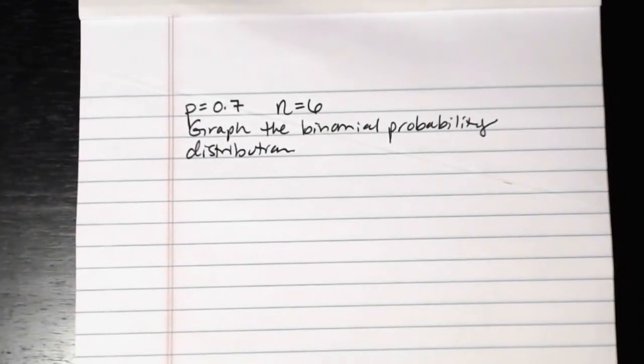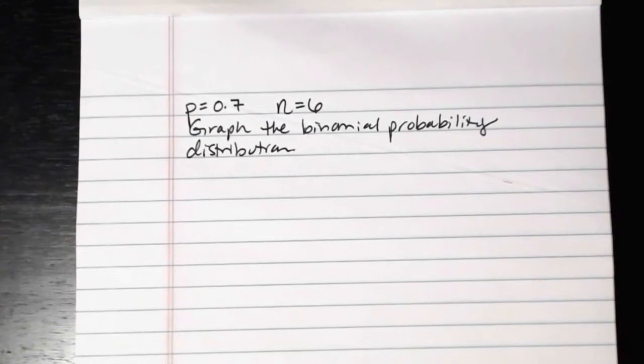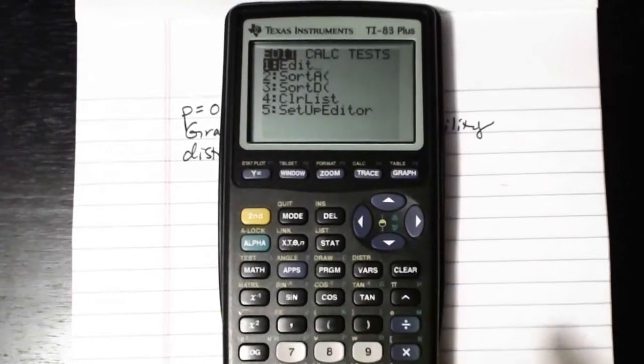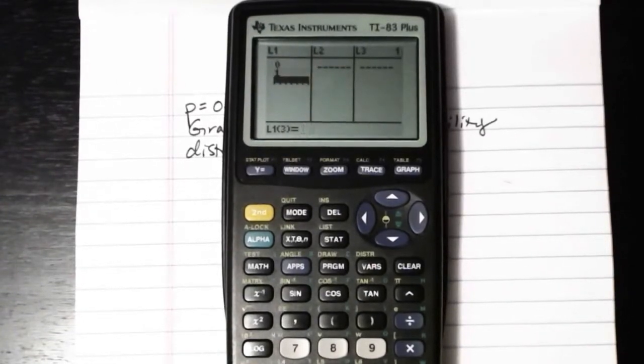Now the first thing that we'll need is to use the calculator to input the actual binomial probability table. Into our list one we're going to put the numbers of possible successes, the r values. Since there are six trials, it is possible to have zero successes out of the six, one out of the six, two out of the six, and so forth, all the way up to six out of six successes. So into our calculator, if we go into stat and then select option one edit, now if you have any data in here you'll want to go ahead and clear it out, but we'll enter the numbers zero through six in the first list because that represents our number of successes out of n trials.